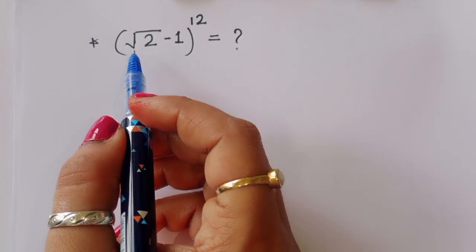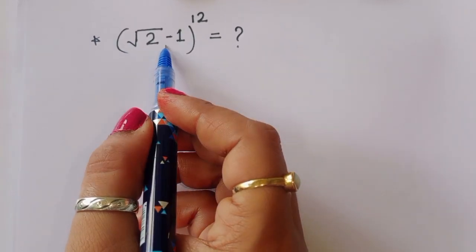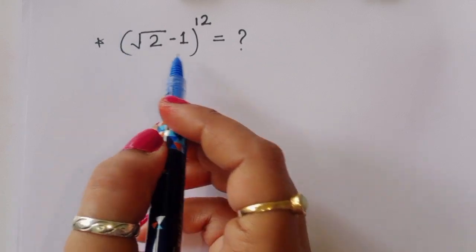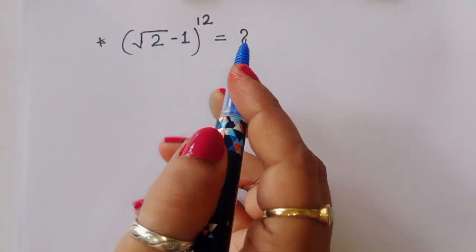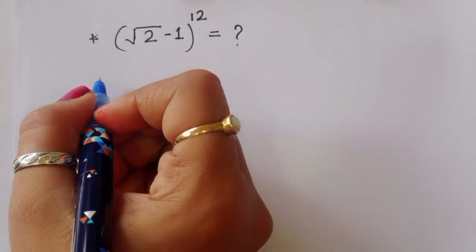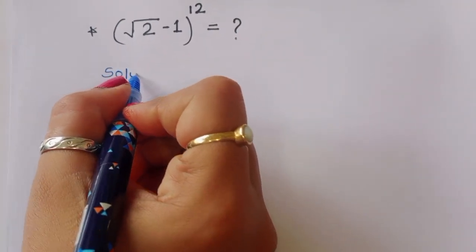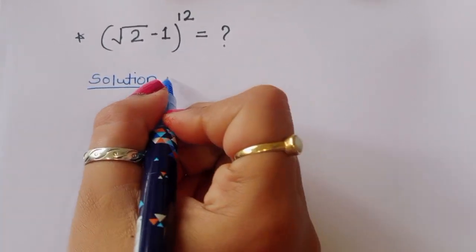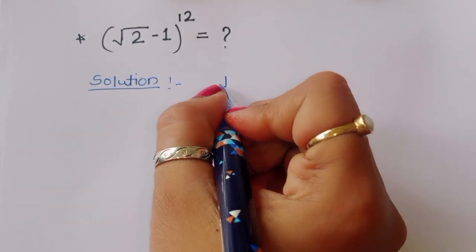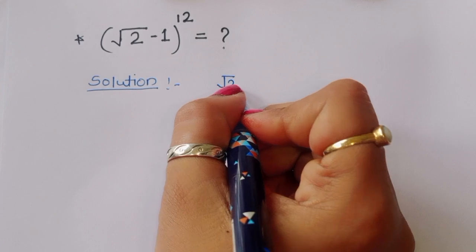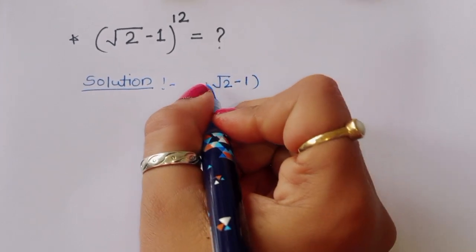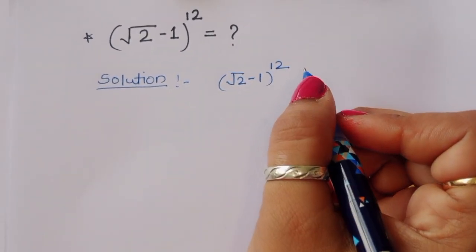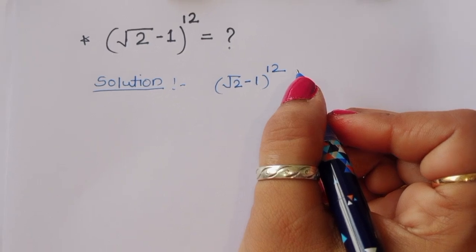The question is: find the value of (√2 - 1)^12. Let's see the solution.